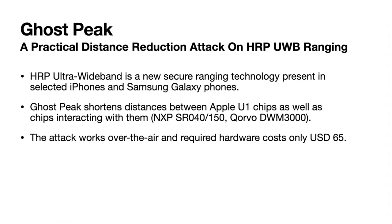Ghost Peak is an attack on these chips that allows distance shortening. While the main target is Apple's U1 chip, it also works when the U1 chip interacts with chips of other vendors. The attack works over the air and costs only 65 US dollars.